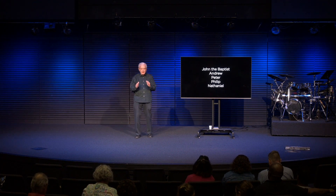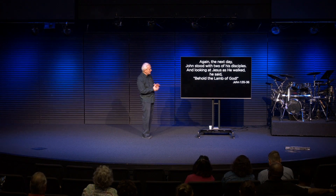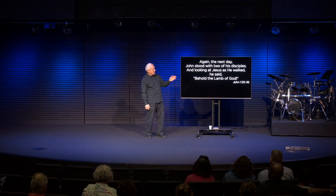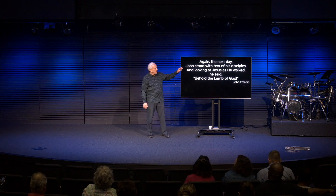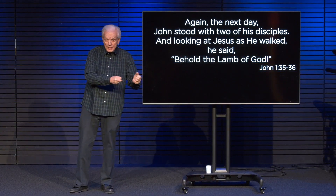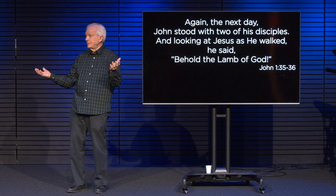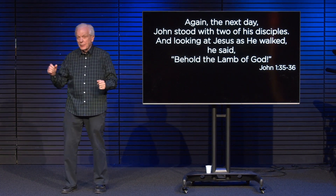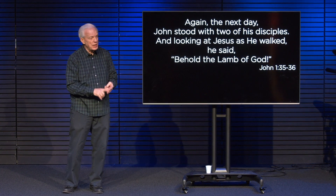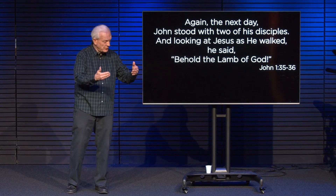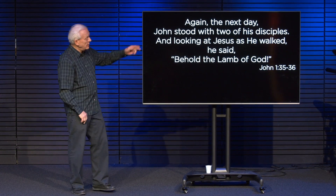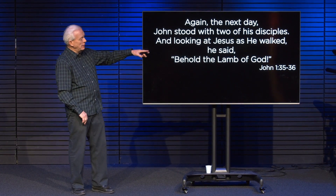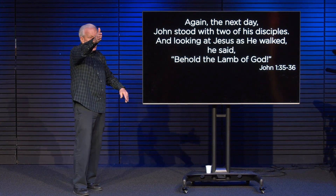Here's how this section begins. John 1:35 through 51 starts with verse 35: 'Again, the next day, John stood with two of his disciples and looking at Jesus as he walked, he said, Behold, the Lamb of God.' Now, the John here is John the Baptist. He's got two of his disciples — men who had been learning from him — and we're going to learn that their names are Andrew and John. John the Baptist stood with those two men, looking at Jesus as he walked by, and said, 'Behold, the Lamb of God.'